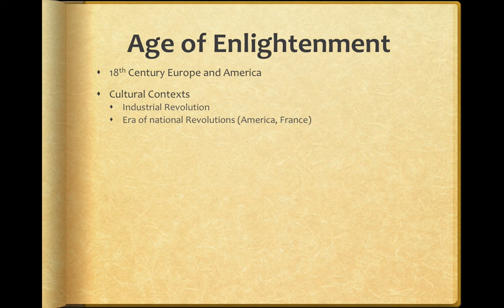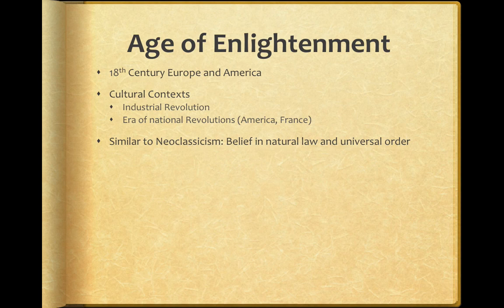The Age of Enlightenment thinkers had one key similarity to neoclassicism: they looked at the world and said there is a natural, pre-existing law and universal order to the world. Nature has a plan, a structure, and an order that is inherent and pre-existing. Humans may come along and discover that order and structure, but it was already there beforehand.